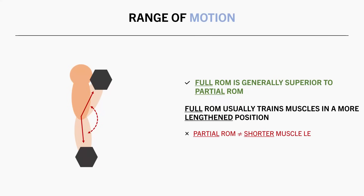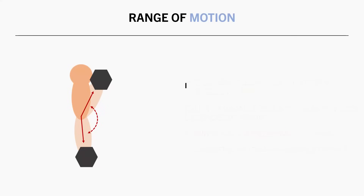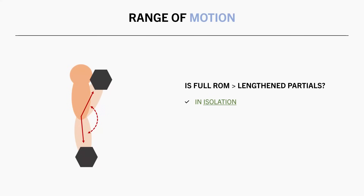However, as we have discussed, partial range of motion doesn't always mean the muscle is trained at a shorter length, since partials could be performed as shortened partials or lengthened partials. So another question is: is it better to perform partial reps in the lengthened half of the movement compared with standard full range of motion training for muscle growth? In isolation, the evidence tends to find similar or slightly superior growth from lengthened partials.